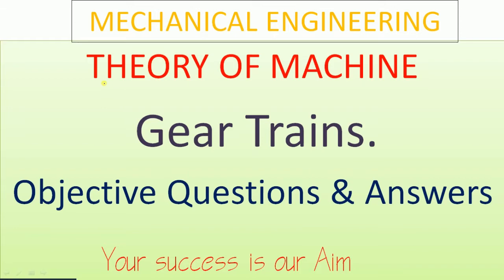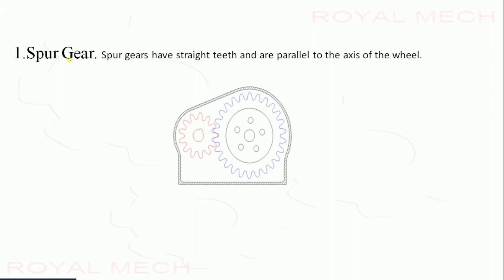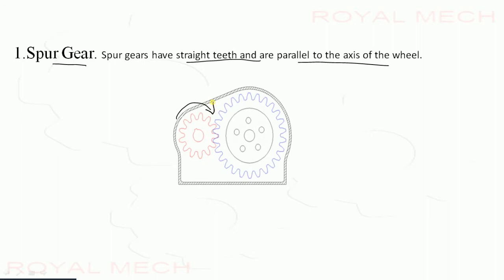In this video we are studying Theory of Machines Chapter: Gear Trains — objective questions and answers. First, an introduction about gears. A spur gear has straight teeth parallel to the axis of the wheel. One gear rotates in a certain direction, either clockwise or anticlockwise, and the other gear rotates opposite to the driver gear.